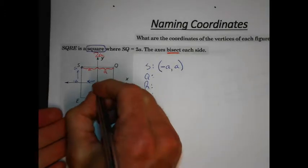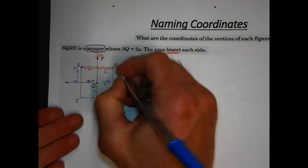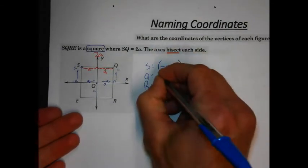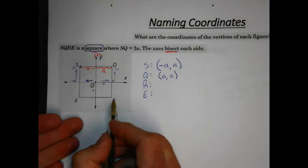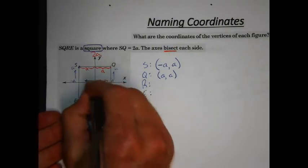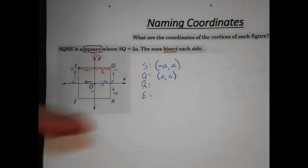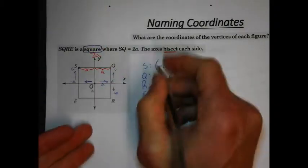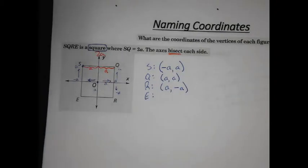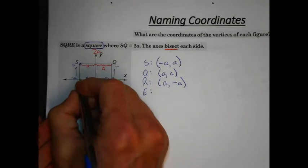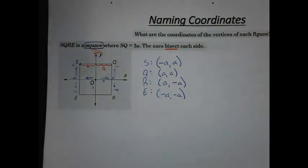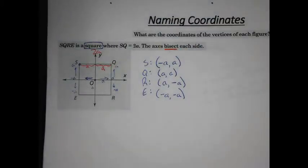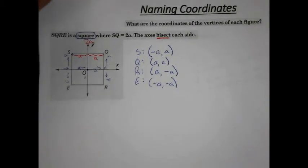Continuing with square SQRE: vertex Q is in Quadrant 1 — we went positive A on x and positive A on y, giving coordinates (A, A). Vertex R is in Quadrant 4 — positive A on x, negative A on y, giving coordinates (A, -A). Vertex E is in Quadrant 3 — negative A on x, negative A on y, giving coordinates (-A, -A). That's how we name the coordinates of each vertex using abstract values.